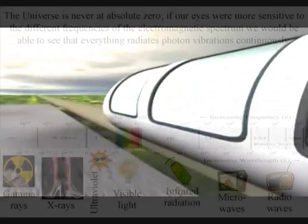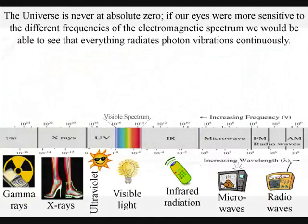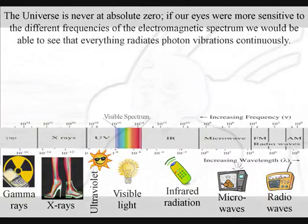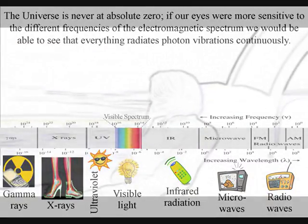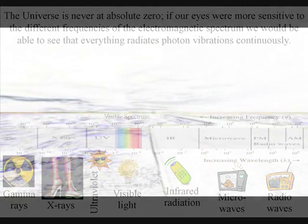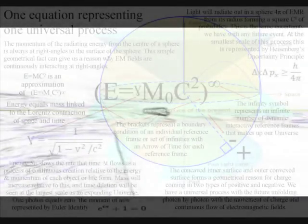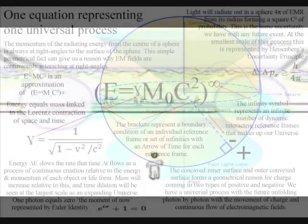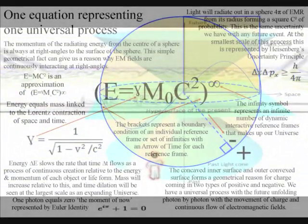If our eyes were more sensitive to the different wavelengths of the electromagnetic spectrum of light, we would be able to see that everything is radiating light. Even the observer watching the train passing by, is radiating light, and light has momentum, therefore he has his own reference frame, with his own unique view of the universe.